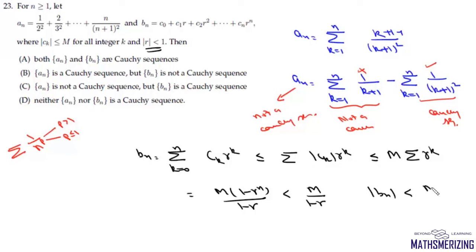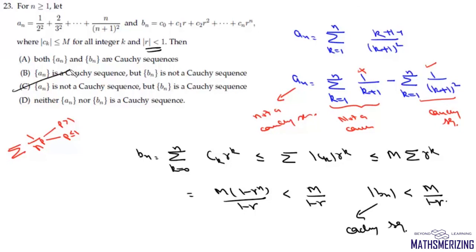So this sequence Bₙ will be a Cauchy sequence. Therefore, the answer to this question is: Aₙ is not a Cauchy sequence but Bₙ is a Cauchy sequence — and that's option C.